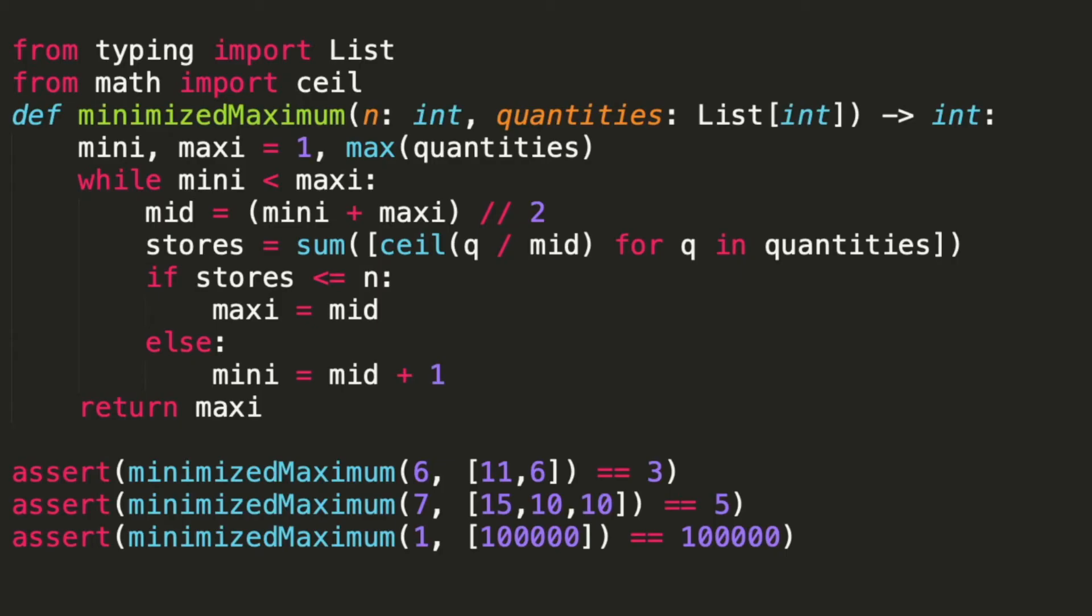Let's take a look at the code. Mini and maxi are the lower and the upper limit of the maximum number of products. Lower limit is 1, upper limit is the maximum number from the given list quantities.